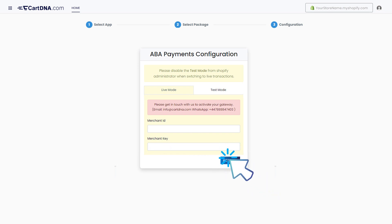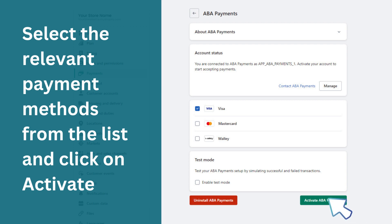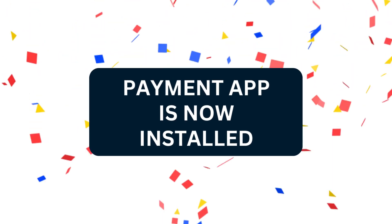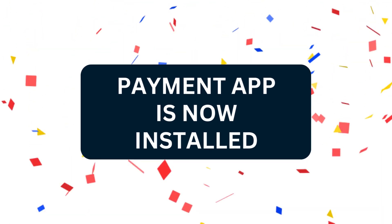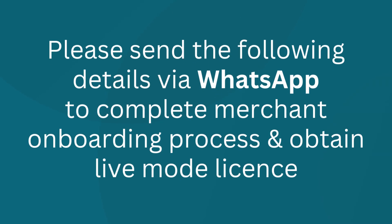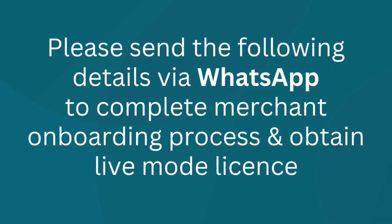Select the relevant payment methods from the list and click on Activate. Your payment app is installed. Please send the following details via WhatsApp to complete the merchant onboarding process and we can activate the live mode of the application.